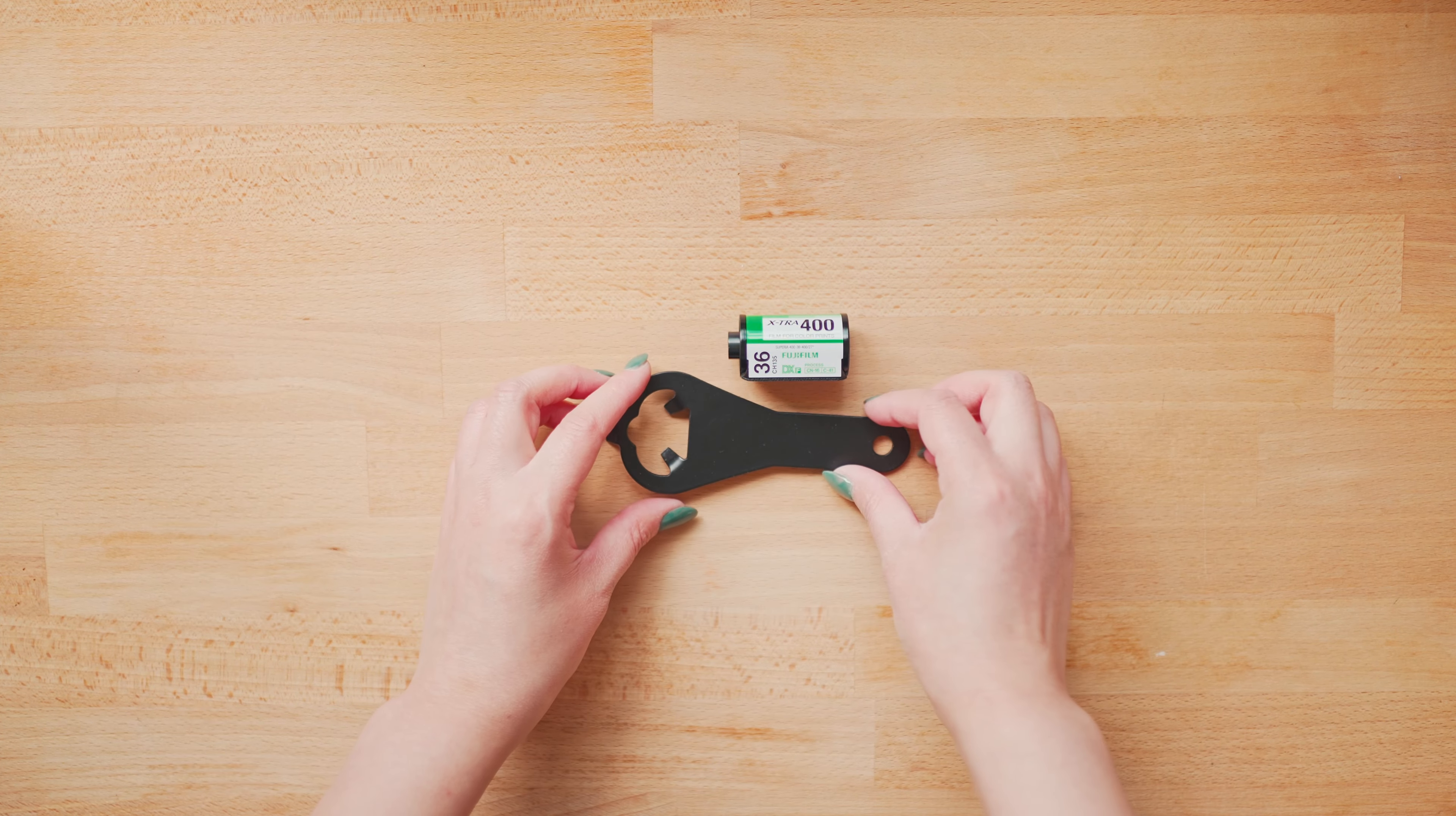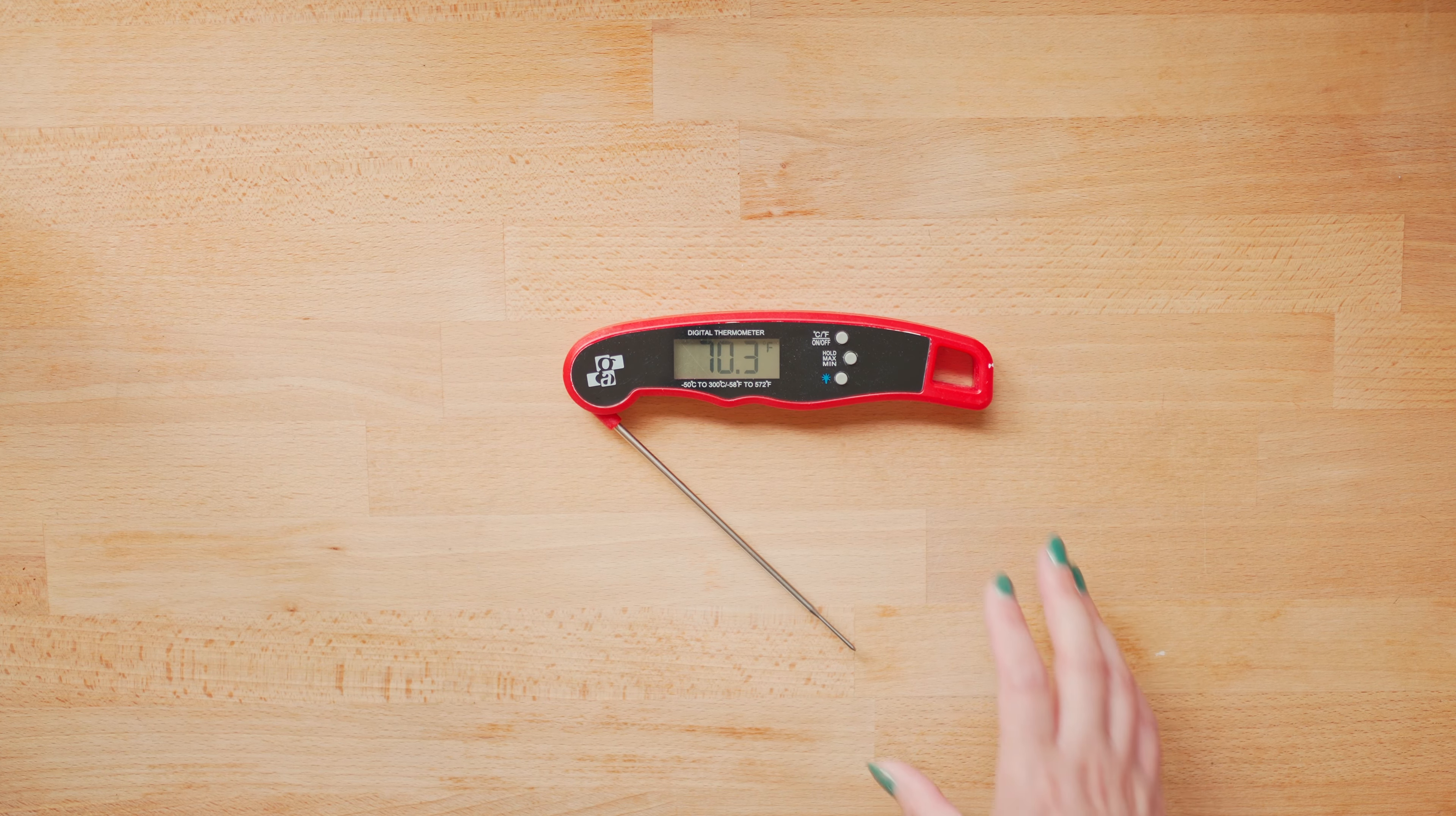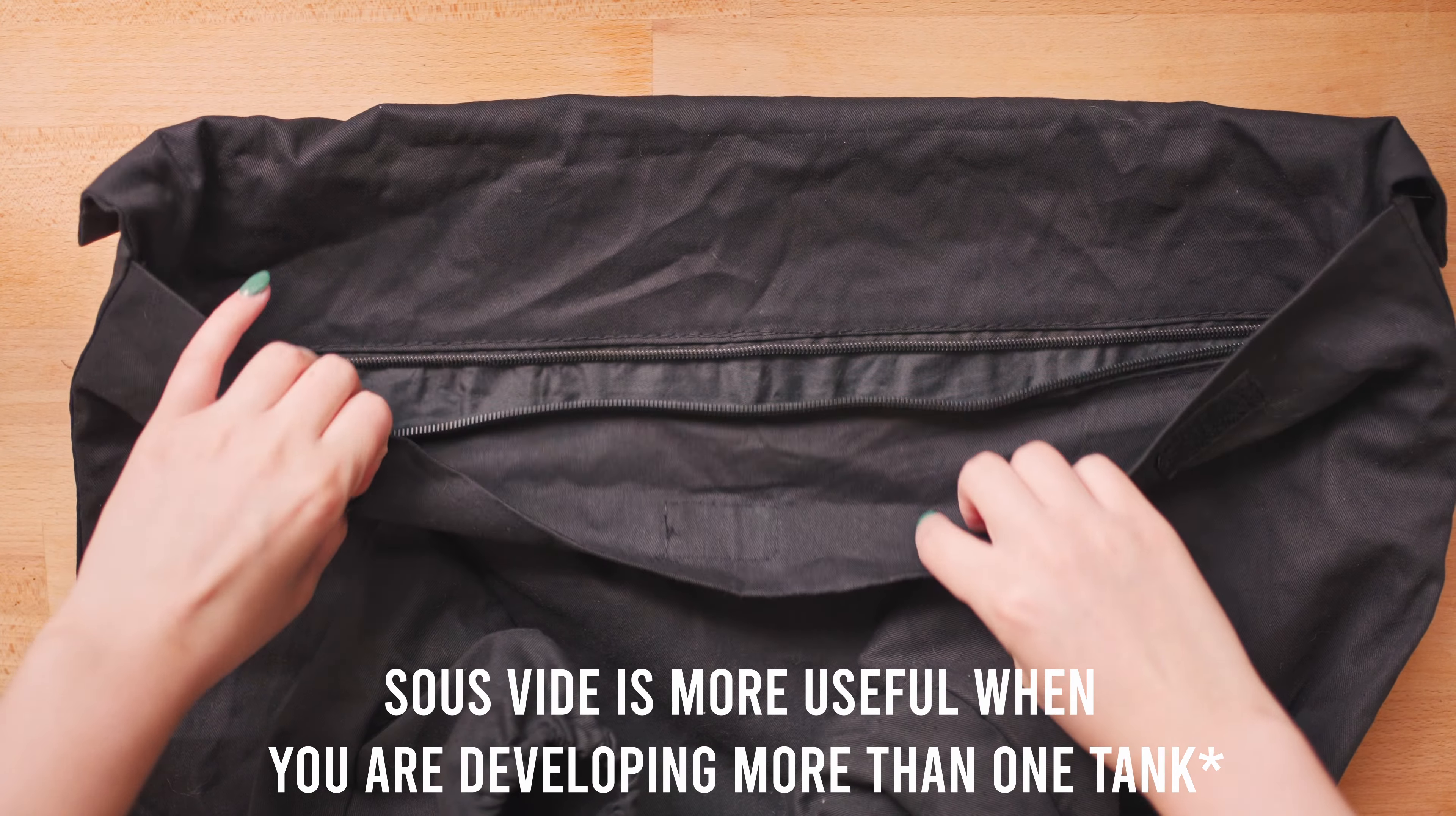I'm also doing the sous vide method. If you don't have a sous vide that's okay. When I first started I used a stainless steel pot with some boiling water and if my temp dropped I'd just add more boiling water to the pot. Developing film seems intense and precise but in reality there's a lot of wiggle room so I wouldn't stress too much about temp regulation.